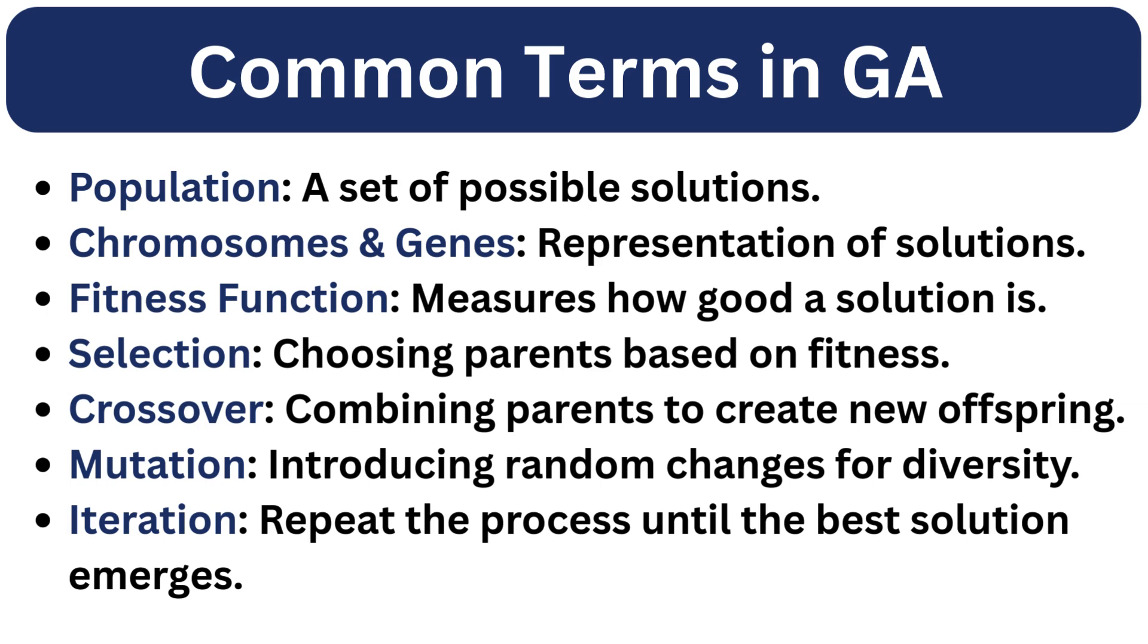Fitness function evaluates how good a solution is. The higher the fitness, the better the solution. Selection is the process of choosing the best chromosomes to create the next generation. Crossover is a genetic operation where two parent chromosomes combine to create offspring. Mutation is a slight random change in a chromosome to introduce diversity and prevent premature convergence.